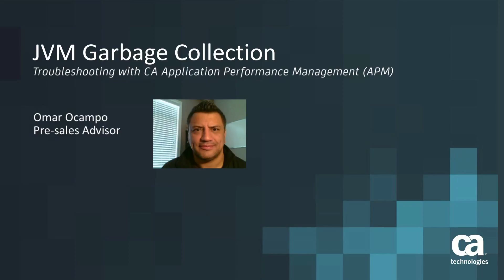Welcome guys to another CA APM Tech Talk. My name is Omar Ocampo and today I'm going to be going over how to troubleshoot JVM garbage collection on the Introscope. We're going to be looking at what metrics in Introscope we want to look at, what metrics can help us understand how often GC is kicking in, how long GC is taking, and really understanding the performance of GC itself and how that might be impacting our application. But before we jump into examples, I want to do a little bit of theory to make sure everybody's on the same page.